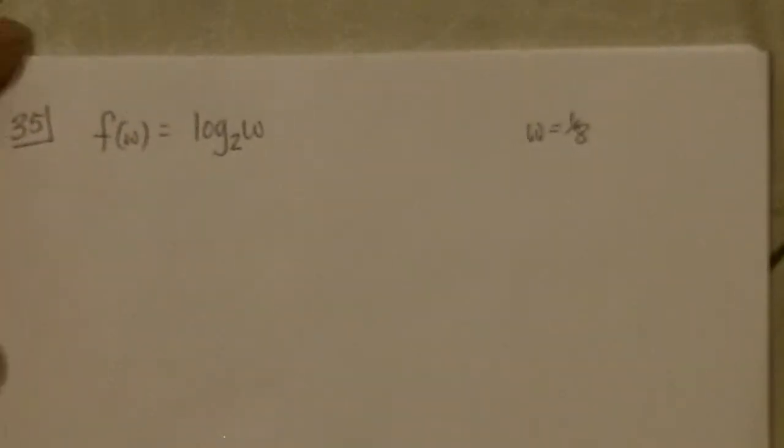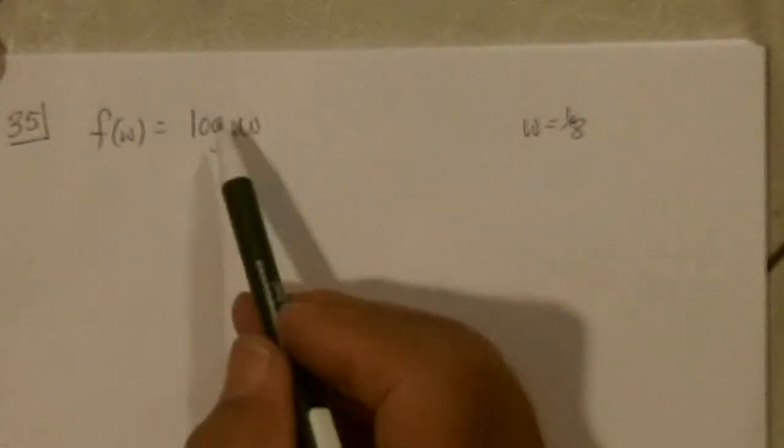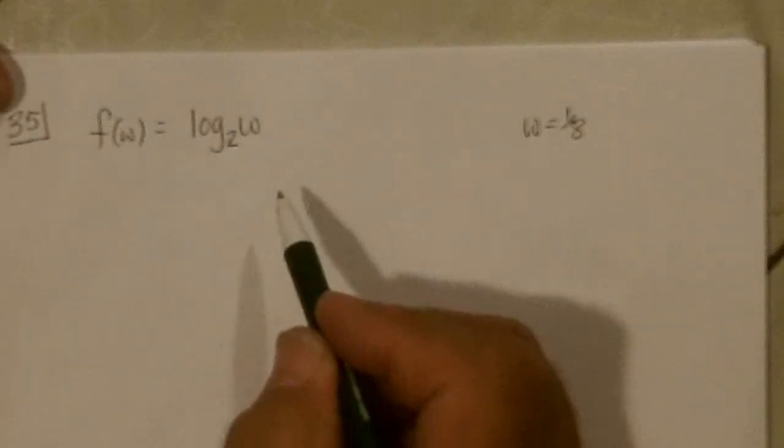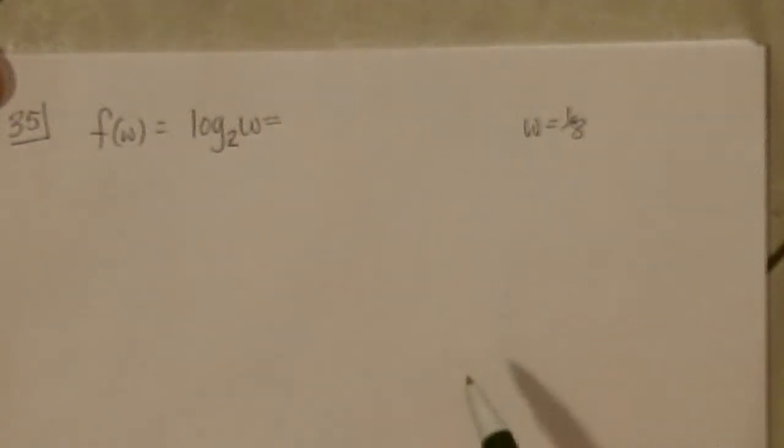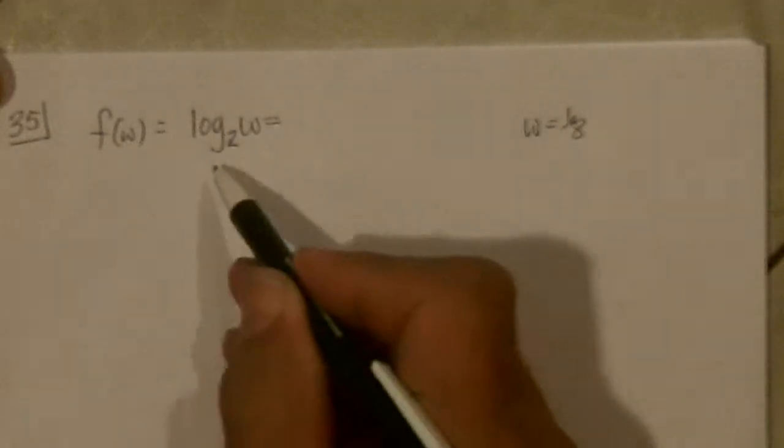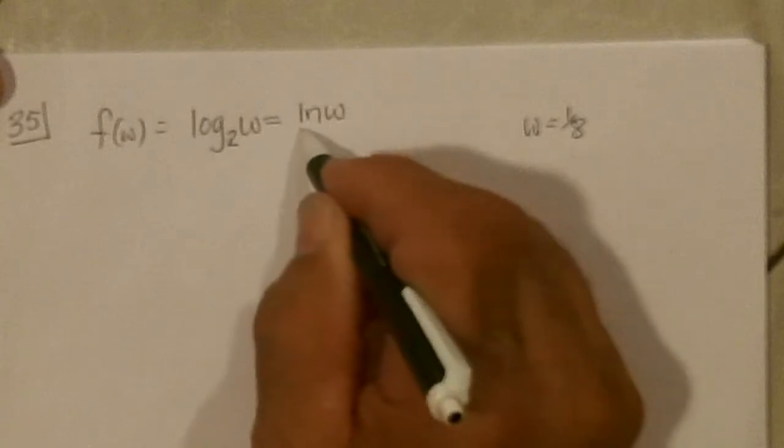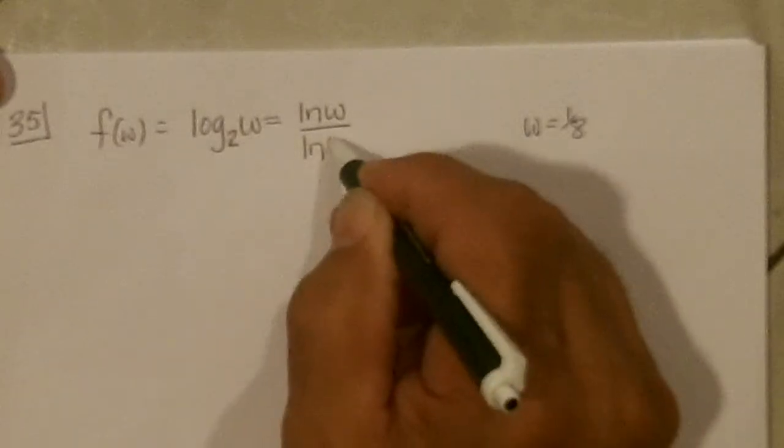Okay, 35. Find the equation in the tangent line for this. Well, if we have not a natural log, we can't just say it's 1 over this. So we have to, we'll convert this to natural logs by using the change the base rule, which becomes the natural log of W over the natural log of the base, 2.